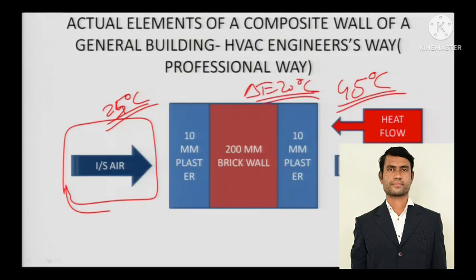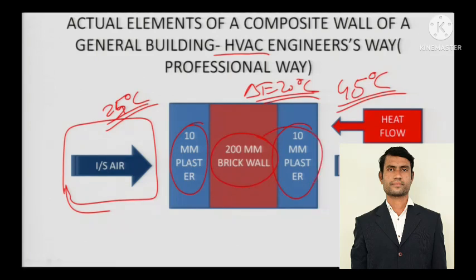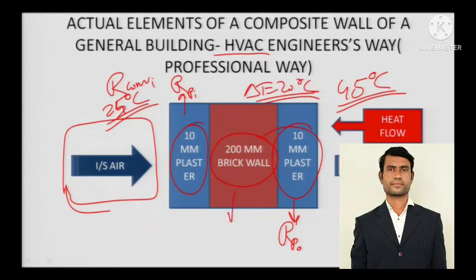That is a huge Delta T, and this heat has to be overcome and removed — that is what HVAC engineers in consultancies do. It's a brick wall, plaster inside, plaster outside. As we have seen in theory, each and every element of the wall offers resistance — air also offers resistance. So there is convection resistance inside, convection resistance outside, resistance for inside plaster, outside plaster, and the brick wall.